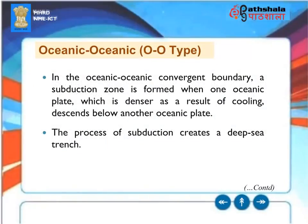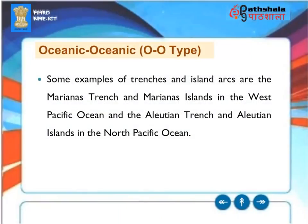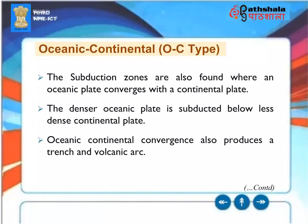In the oceanic-oceanic convergent boundary (O-O type), a subduction zone is formed when one oceanic plate — denser as a result of cooling — descends below another oceanic plate. The process of subduction creates a deep sea trench. Examples include the Mariana Trench and the Mariana Islands in the West Pacific Ocean, and the Aleutian Trench and Aleutian Islands in the North Pacific Ocean.